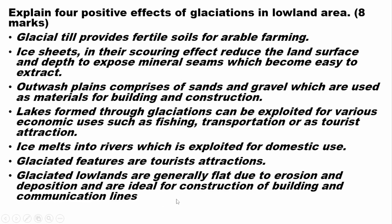Explain four positive effects of glaciation in lowland areas. First, it provides fertile soils for arable farming. Ice sheets through their scouring effect reduce the land surface to expose mineral seams, which become easy to extract. Outwash plains comprise sand and gravel, which are used as building and construction materials. Lakes formed through glaciation can be exploited for fishing, transportation, and as tourist attractions. Ice melts into rivers, which are exploited for domestic use. Glaciated features are tourist attractions, and glaciated lowlands are generally flat due to erosion and deposition, making them ideal for construction of buildings and communication lines.